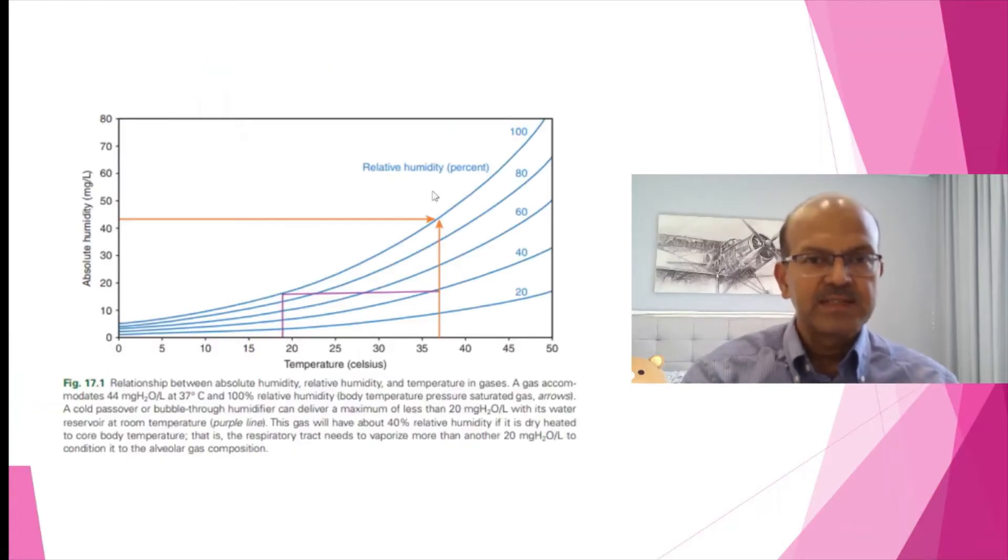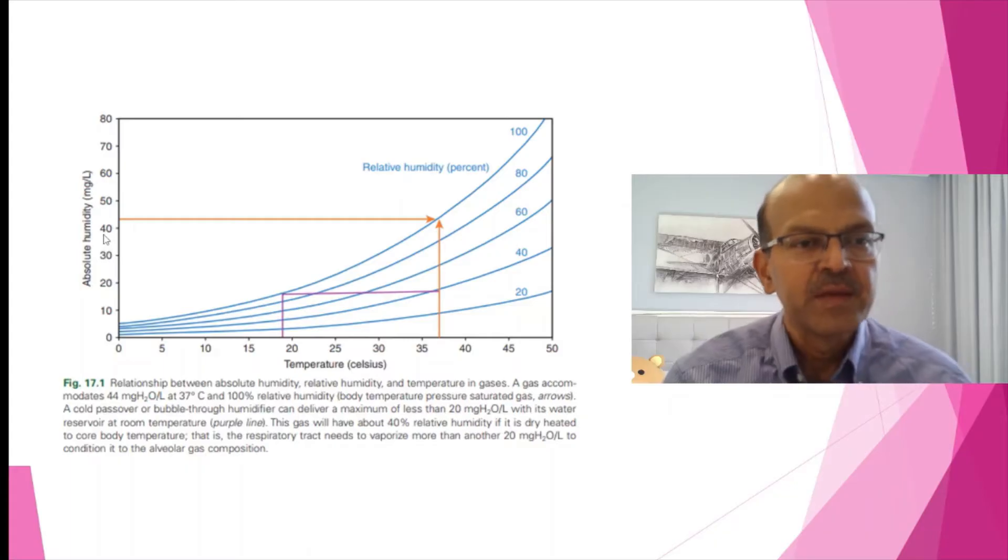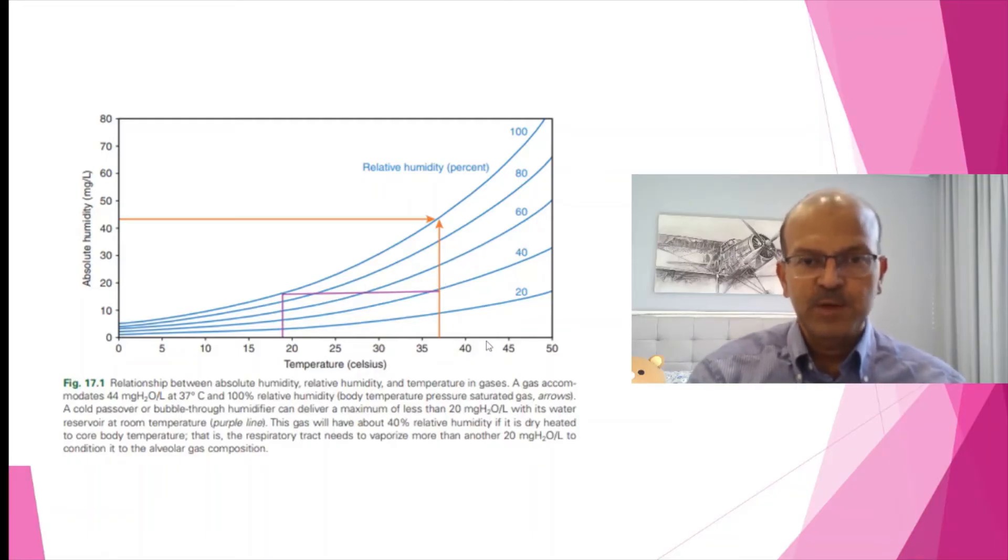So this chart illustrates the uptake of humidity according to the temperature. When you heat up the gas, the actual water vapor content that a gas can carry increases. So for the same absolute humidity, the milligrams of water that can be taken is increasing. The previous humidifiers allowed us to heat up to 40, 42 degrees at the humidifier level, and that allowed high water vapor to enter.